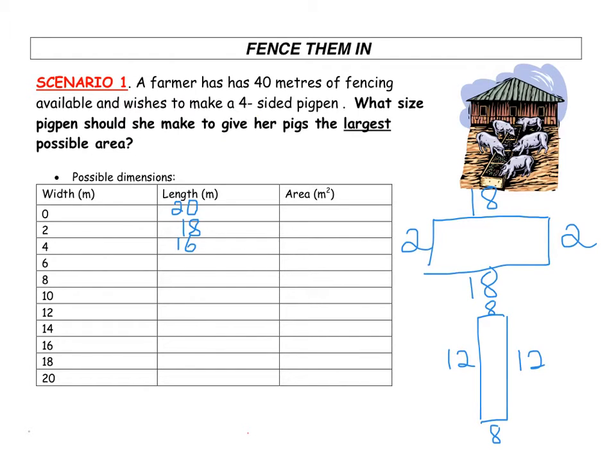We would have an 8 by 12 option and obviously that could be the other way around as well. We would have a 10 by 10 option and continue on. Here we have the whole table filled in and now we can look at calculating the area. To calculate the area of a rectangle, it's just width times length.